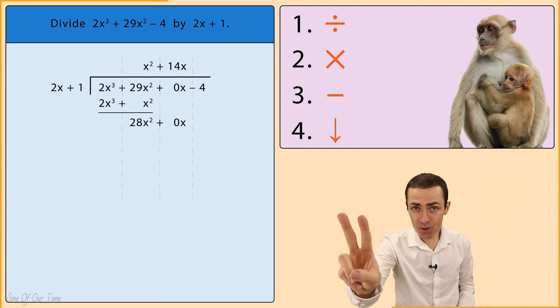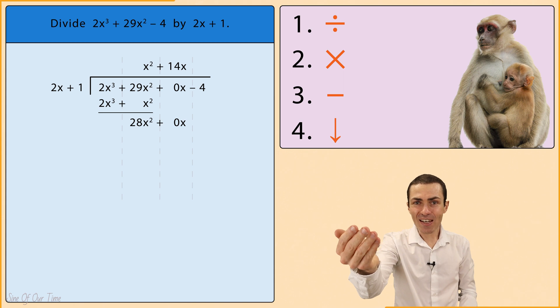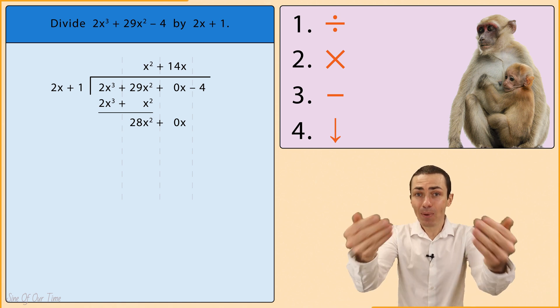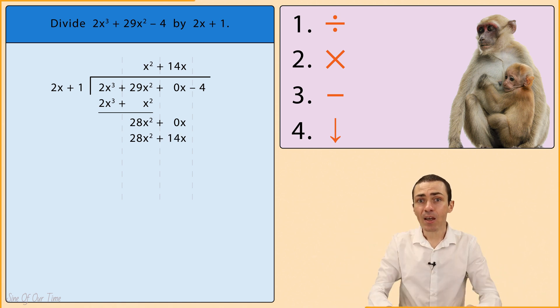And then step 2: Multiply. We take that 14x and we multiply by 2x plus 1 in order to give us 28x squared plus 14x, which we write in a new line with each term in its appropriate column.